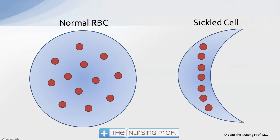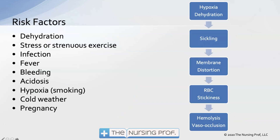The other disadvantage of the sickled cell is that it's no longer flexible — now it's stiff with a crescent shape. It's likely to get stuck in the circulation, causing periods of acute crisis with a lot of pain. That pain comes from sickled cells blocking the circulation and causing ischemia.